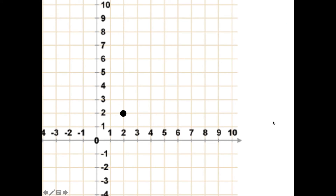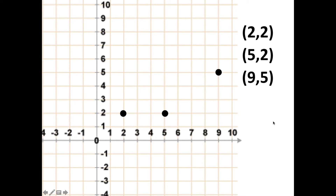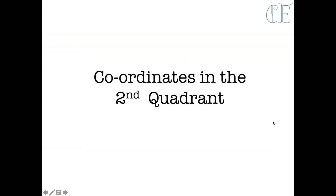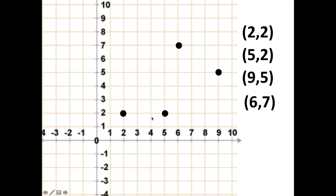Coordinates in the first quadrant: here we have (2, 2), (5, 2), (9, 5), (6, 7). So (2, 2) means across to 2 on the x-axis and up to 2 on the y. Then (5, 2) is across five on the x-axis and up two on the y. Then (9, 5) is across to nine and up to five. And (6, 7) is across six and up to seven.